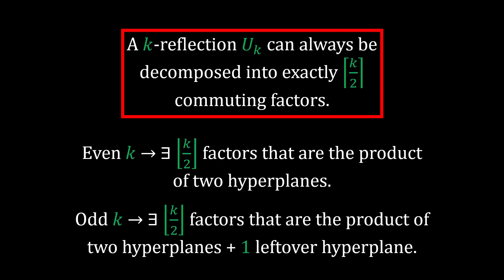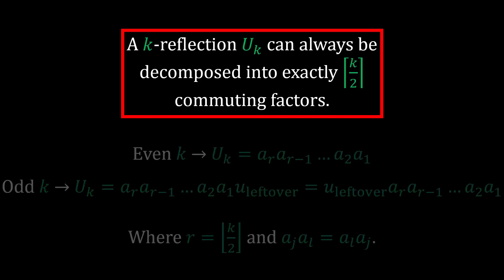the invariant decomposition theorem states, A k-reflection can be decomposed into exactly k over 2 ceiling commuting factors. When k is even, there are k over 2 floor commuting factors that are products of two hyperplanes, and when k is odd, there exists also a leftover hyperplane reflection. Now I know the question you are all dying to ask. What does the theorem say in math form? Well, here it is. If r is the number of such factors, then U sub k can be factored into A sub r, A sub r minus 1, and so on. When k is odd, there is the leftover hyperplane, U sub leftover. These factors all commute, as denoted by the AJAL equals AL AJ. Physically, this means that you can perform any combination of reflections and still get the same result.